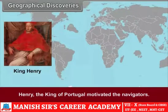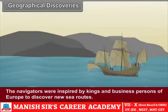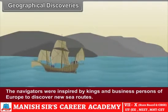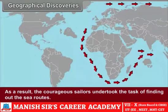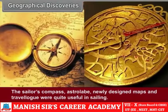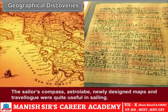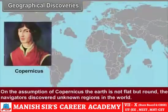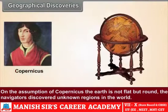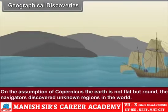Henry, the king of Portugal, motivated the navigators. The navigators were inspired by kings and businesspersons of Europe to discover new sea routes. As a result, the courageous sailors undertook the task of finding out the sea routes. The sailor's compass, astrolabe, newly designed maps, and travelogue were quite useful in sailing. Based on the assumption of Copernicus that the earth is not flat but round, the navigators discovered unknown regions in the world.